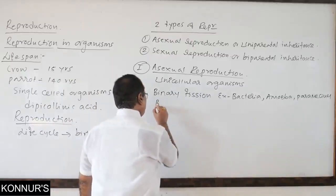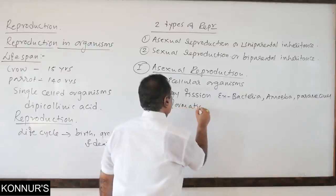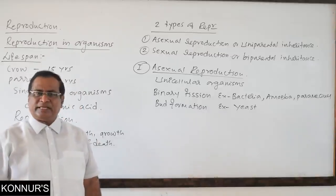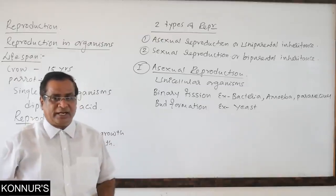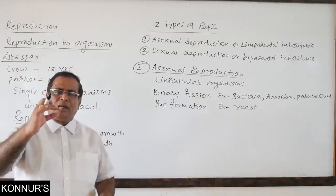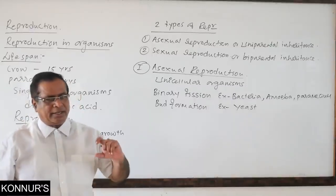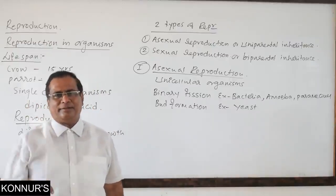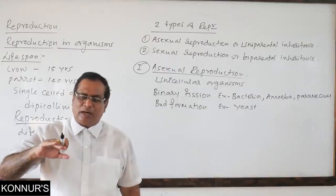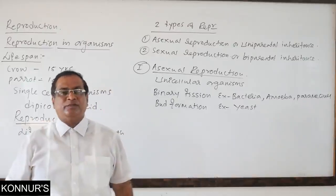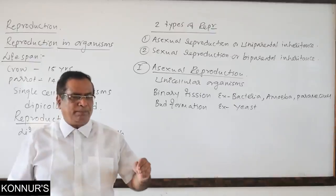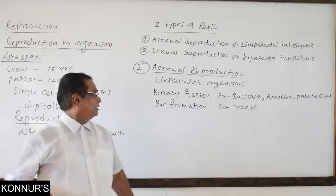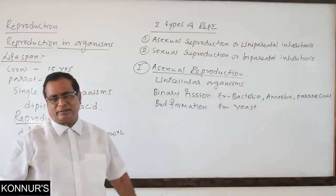Similarly, bud formation occurs in yeast — Saccharomyces cerevisiae — a unicellular fungus. Here, an unequal-sized outgrowth forms, and the content of the main cell divides and enters the bud. One after another, buds form and a pseudomycelium — a false mycelium — develops. When the buds detach, they become new offspring. So bud formation is asexual reproduction in yeast.